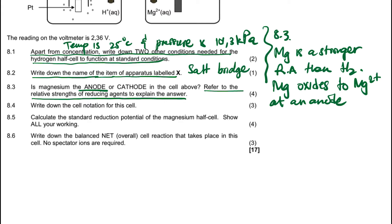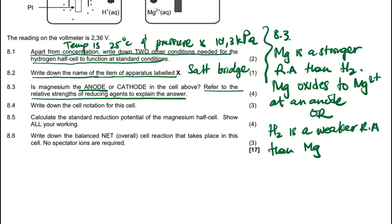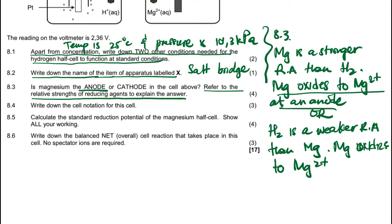Alternatively, you can say hydrogen is a weaker reducing agent than magnesium. If you say that, you keep the same conclusion: magnesium oxidizes to Mg²⁺ at the anode.